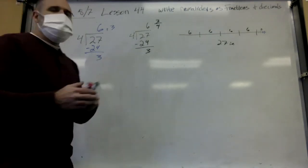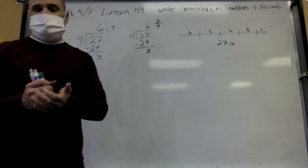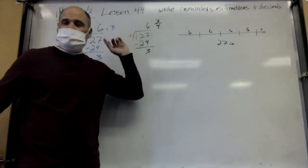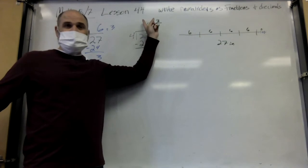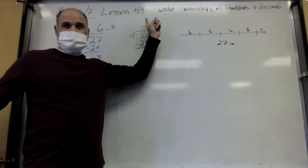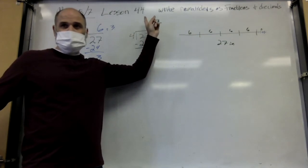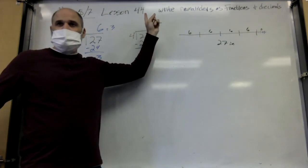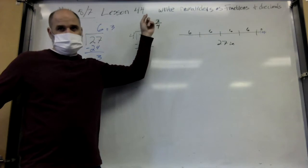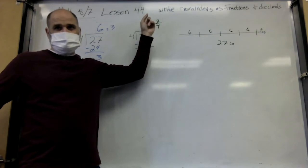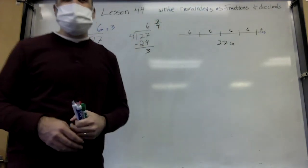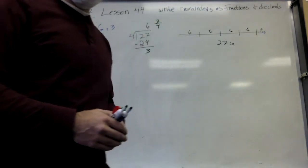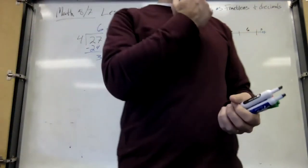Basically the steps are: whatever you get for a remainder, throw it over your divisor and you're done. The other way to write your remainder is to just keep going with the decimal and see what happens.